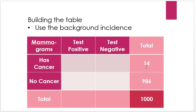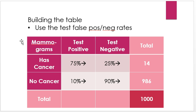The first thing I can fill in is how many of those people have cancer. In a typical population, that gives us 14 with cancer and 986 without — that's the background incidence. Now we use the test's known false positive and negative rates. Of these 14 cancer patients, 75% will test positive and 25% will test negative. Of the 986 who don't have cancer, 10% will test positive and 90% will test negative.